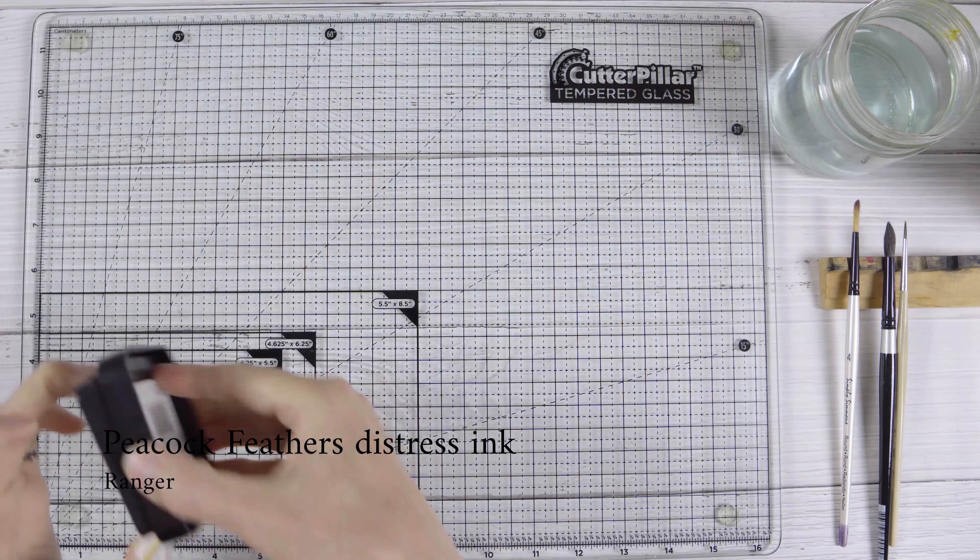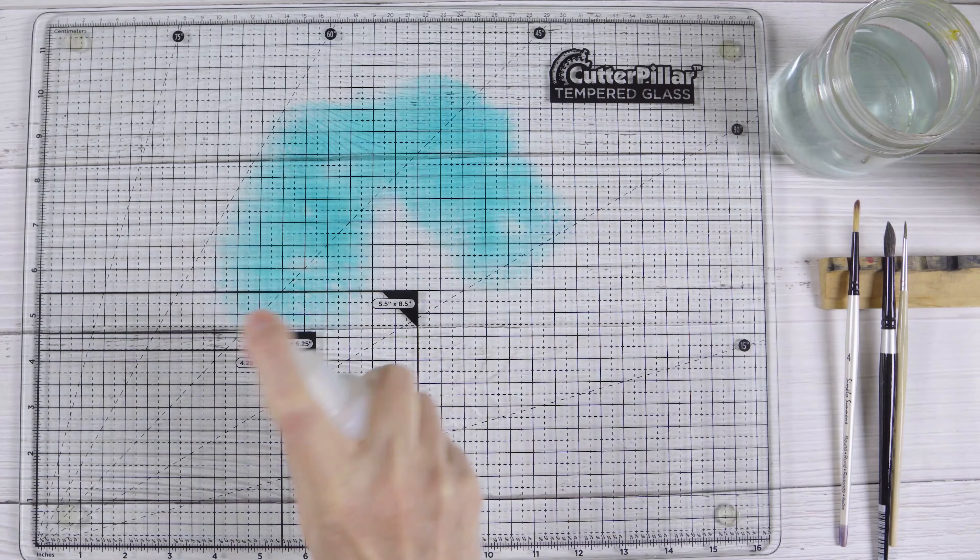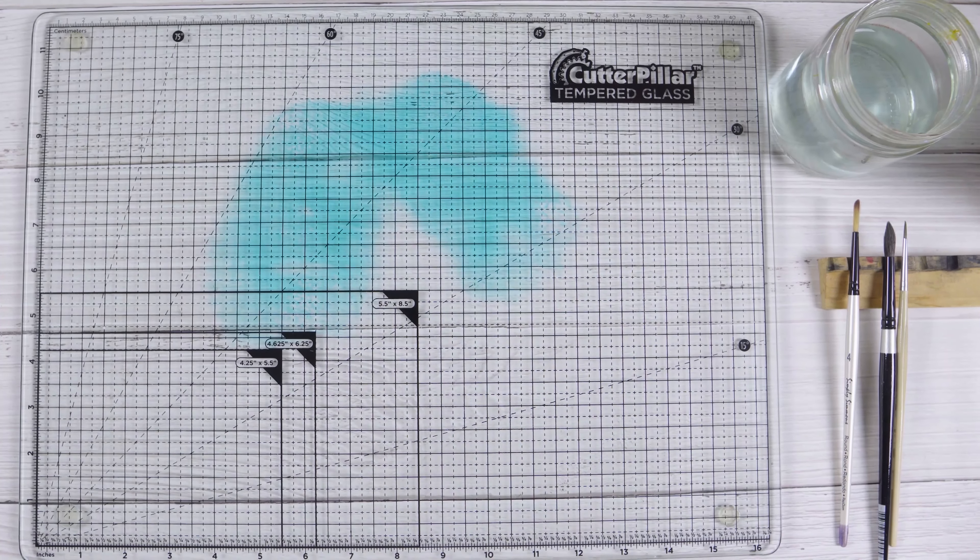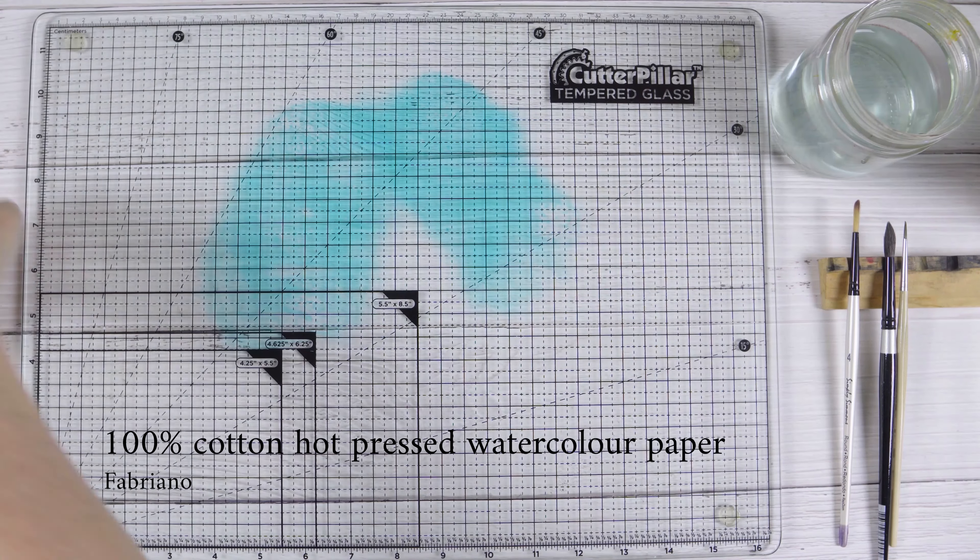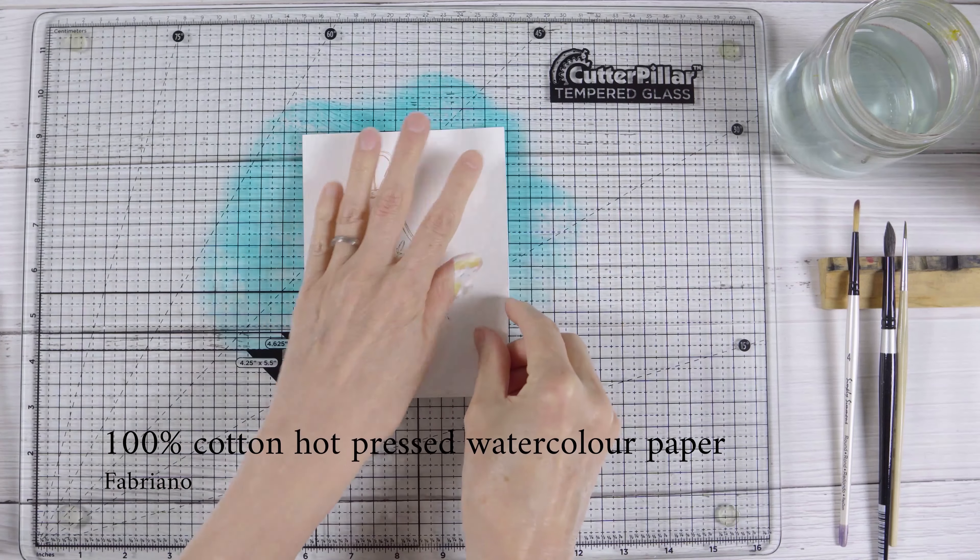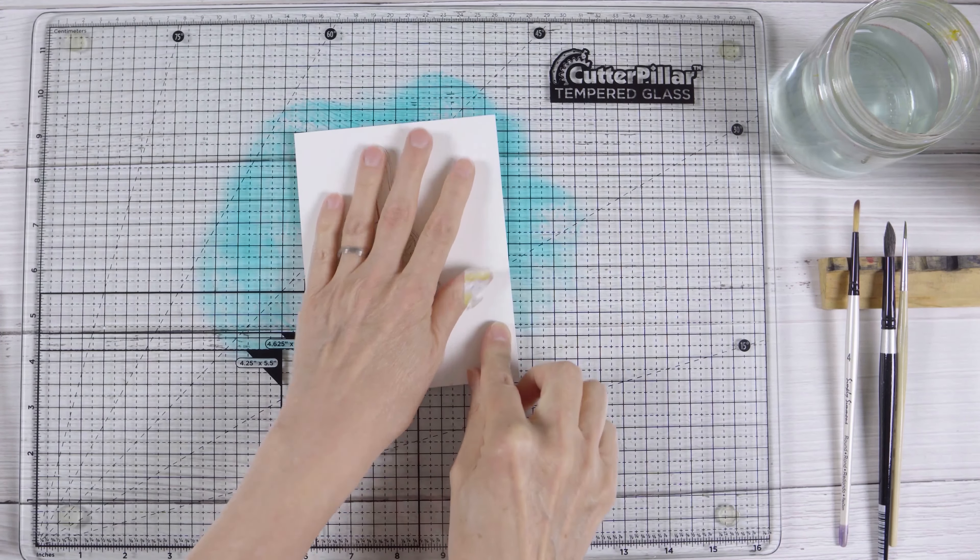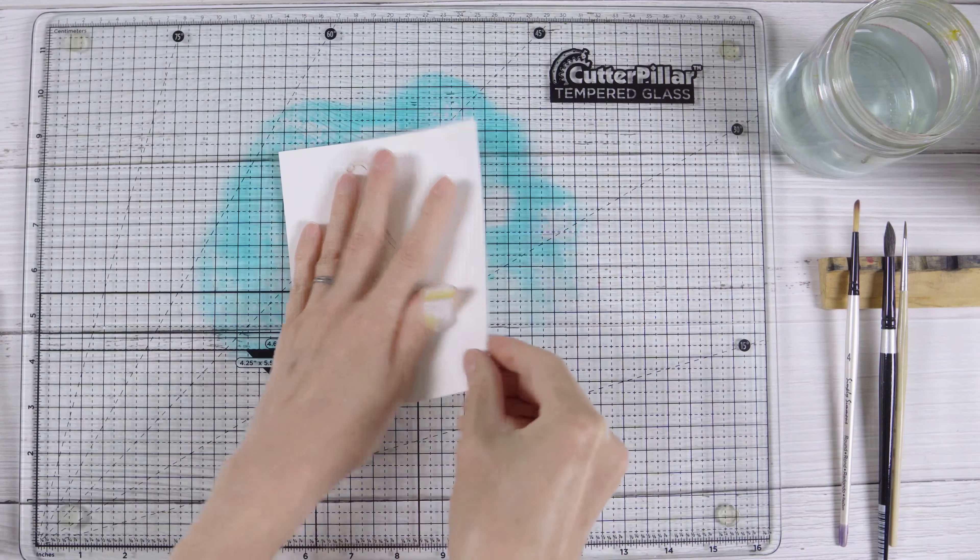Once the masking fluid is dry, I'm ready to make a background on the panel. I'm smooshing some peacock feathers distress ink onto a glass mat and then spritzing it generously with water. Then I get my watercolor panel that has the masking fluid and just swipe it and move it around in that ink.